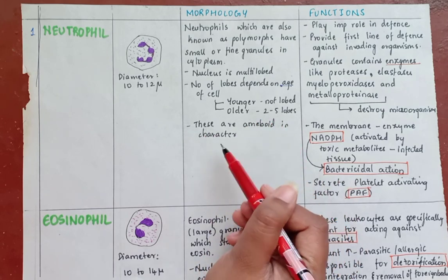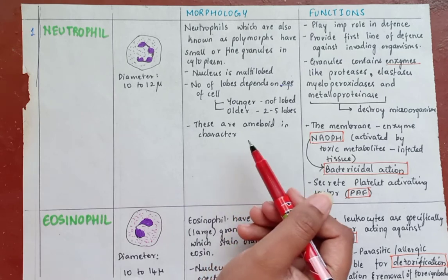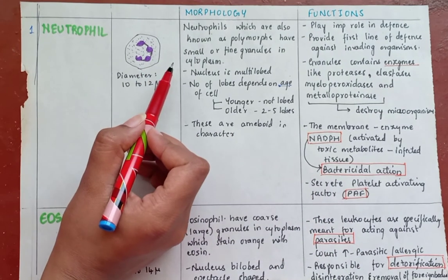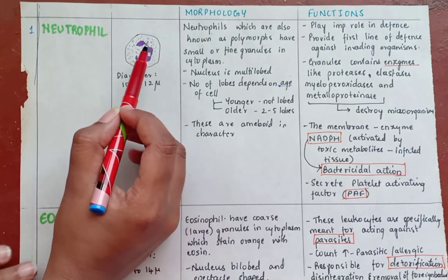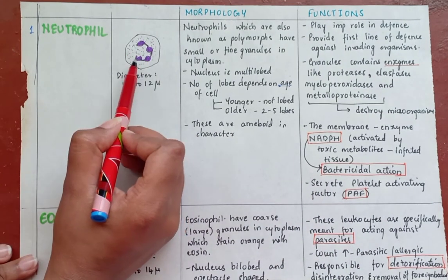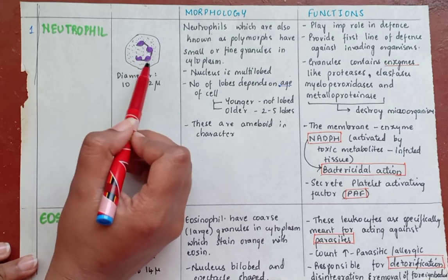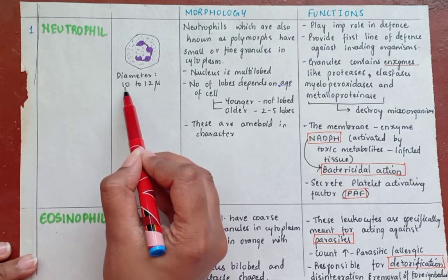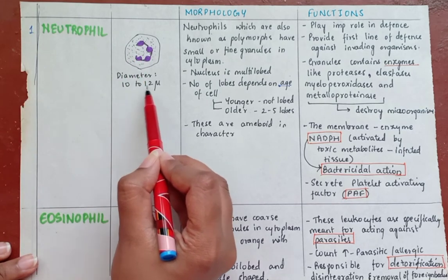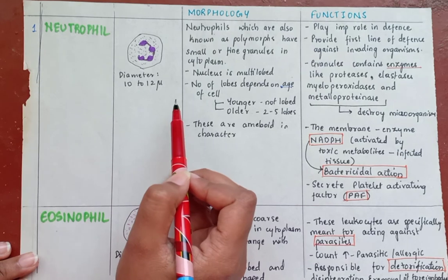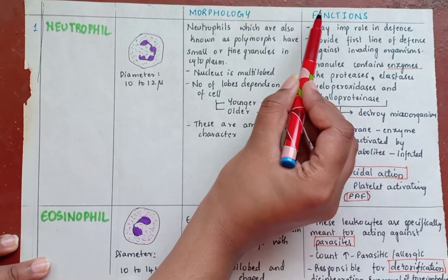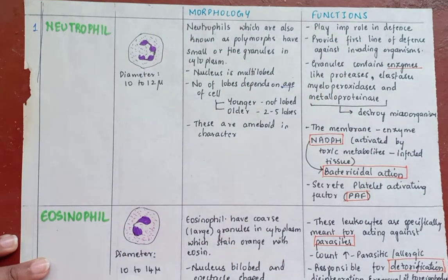Neutrophils are amoeboid in character. There are fine granules and the nucleus is multi-lobed. Diameter is 10 to 12 microns.